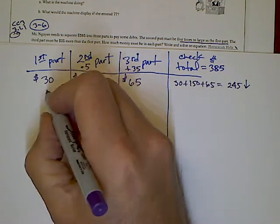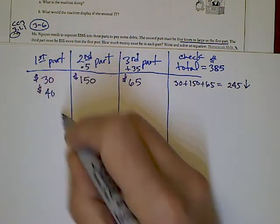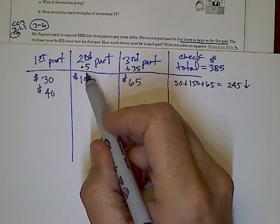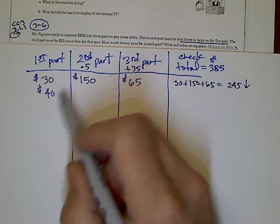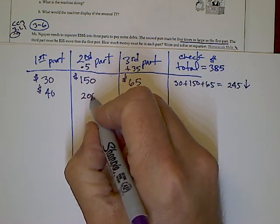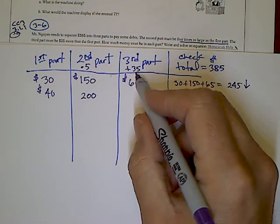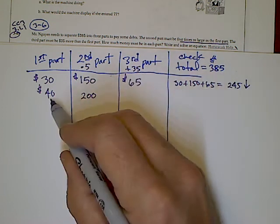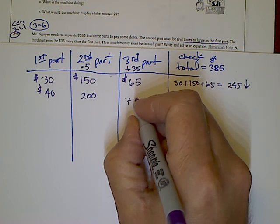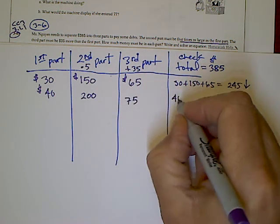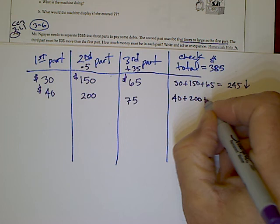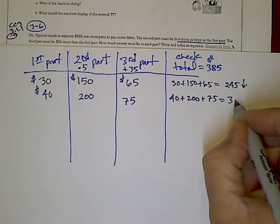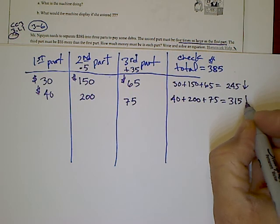I've got to guess higher. Let's guess $40. If I guess $40 for my first part, my second part is five times that, so $200. My third part is $35 more, so $40 plus $35 equals $75. Add those up: $40 plus $200 plus $75 gives me $315. It's still a little too low.